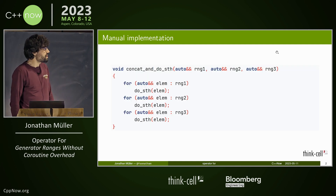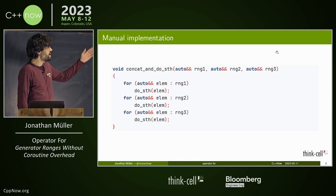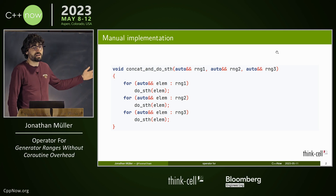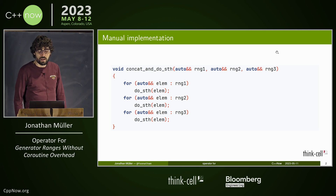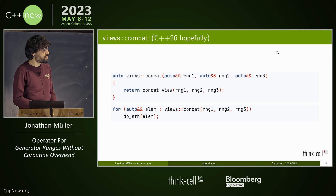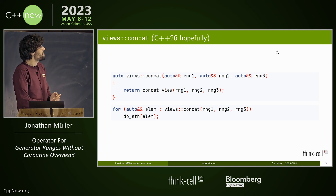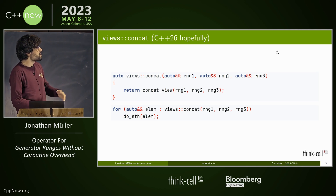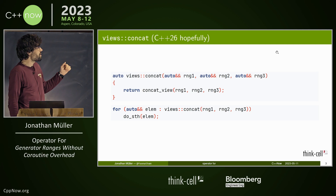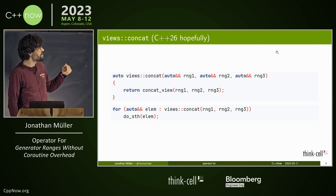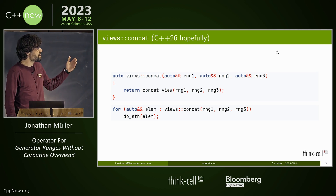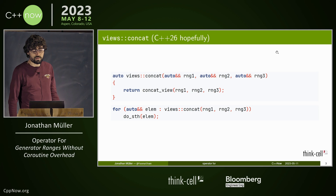We could do that manually, but that's kind of bad — just write three full loops and you've hard-coded it to do something. A better way would be to use concat, hopefully coming in C++26. For simplicity I'm using three here, but the reality is more variadic. So we just create a concat view and then we can iterate over it.